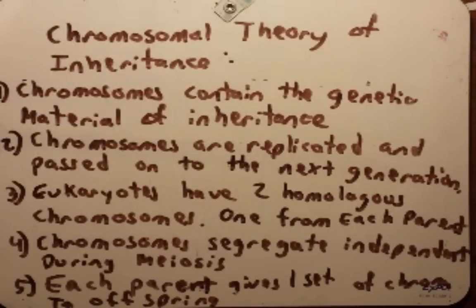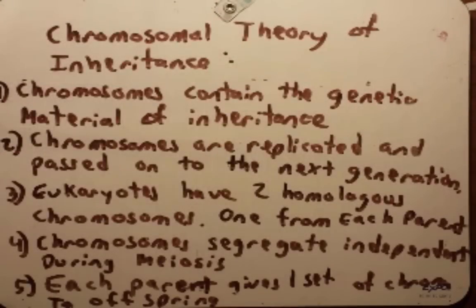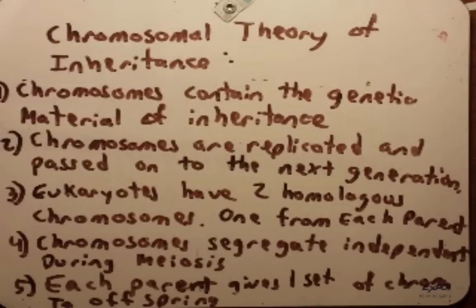The third principle is that eukaryotes have two homologous chromosomes, one from each parent. This doesn't mean they only have two chromosomes — for every chromosome they have, they have a homologous pair with it. Fourth, chromosomes segregate independently during meiosis, so as gametes are made from that diploid cell, chromosomes segregate away from each other independently into the gametes. And the last principle is that each parent gives one set of chromosomes to the offspring — one chromosome of each homologous pair comes from each parent.